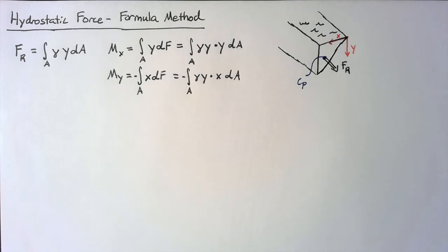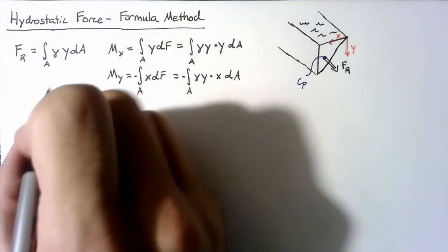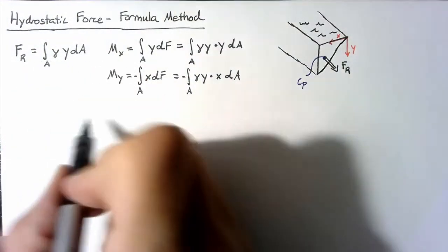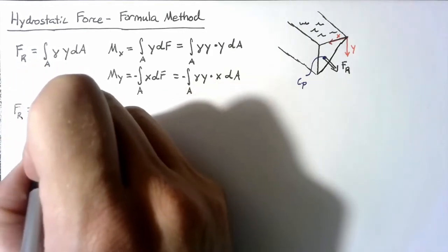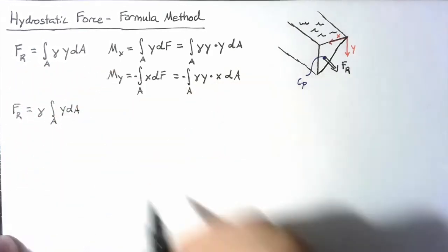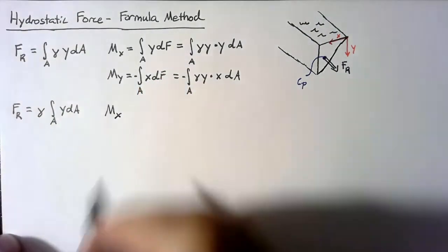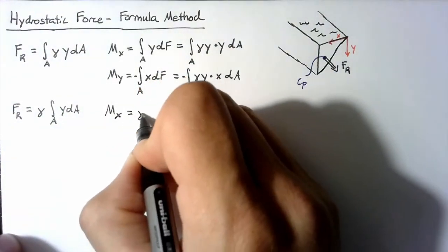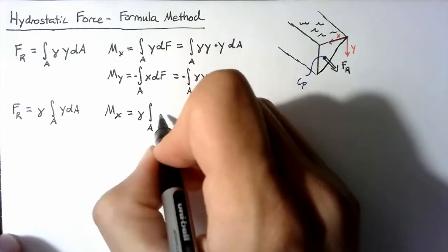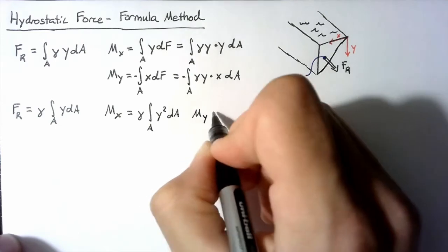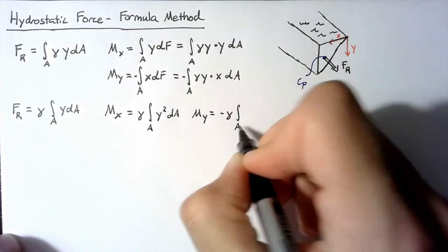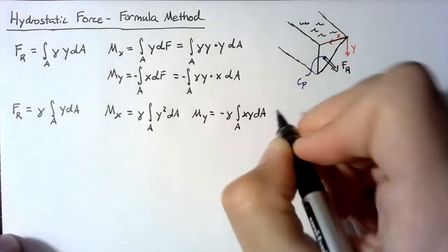Let's simplify these as much as possible so we can recognize values to plug in. For the resultant force F_R, we move gamma outside the integral and get gamma times the integral over area of y·dA. For the moment about x, we take gamma out and integrate y²·dA. And the moment about y is negative gamma times the integral over area of x·y·dA.